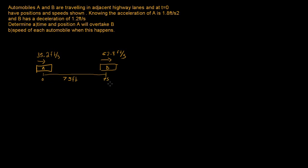Car A has an acceleration of 1.8 feet per second squared, and car B has a deceleration — so B's acceleration is going in the opposite direction — of 1.2 feet per second squared.